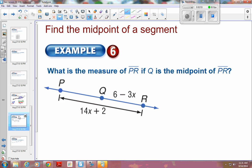Let's do a little bit harder one here. What's the measure of PR if Q is the midpoint? Q is the midpoint, that means that this segment over here and this segment over here are the same length. So that means 2 of these, this would also be a 6 minus 3X. 2 of those would be equal to 1 of this 14X plus 2.